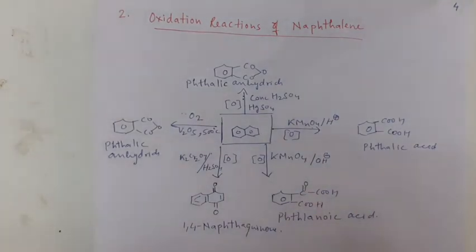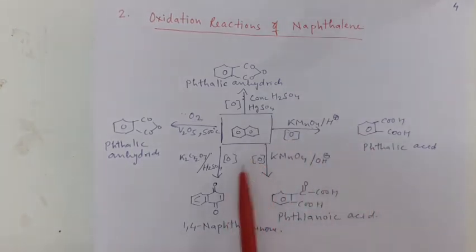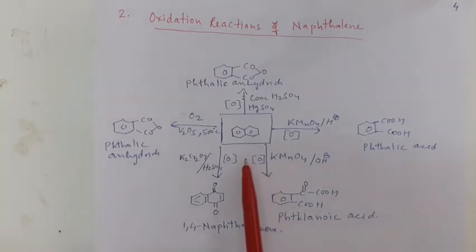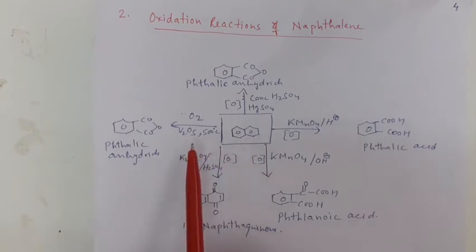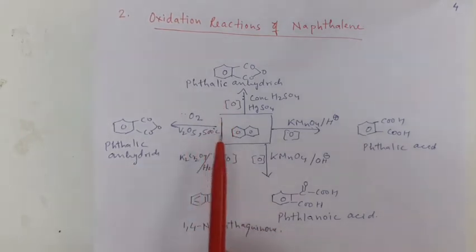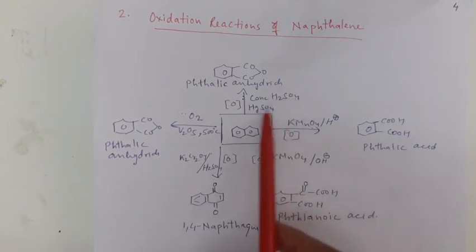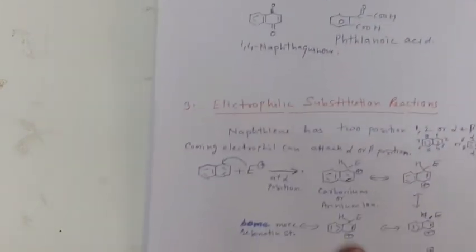The oxidation reactions of naphthalene are as follows. Naphthalene reacts with KMnO4 in the presence of acid to give phthalic acid. Naphthalene reacts with KMnO4 in the presence of base to give phthalonic acid. Naphthalene with potassium dichromate and sulfuric acid is oxidized to give 1,4-naphthaquinone. Naphthalene with vanadium pentaoxide on oxidation gives phthalic anhydride, which is also obtained by oxidation with sulfuric acid and mercury sulfate.